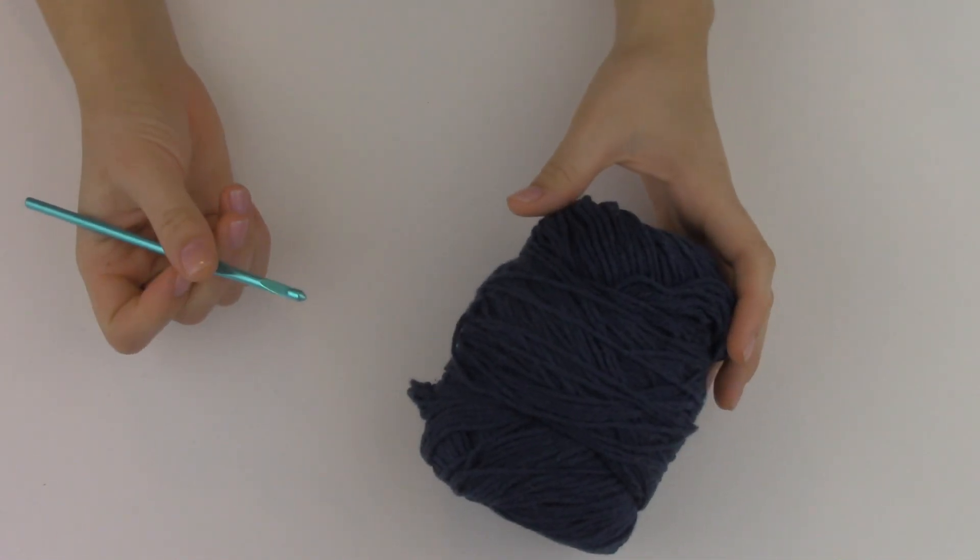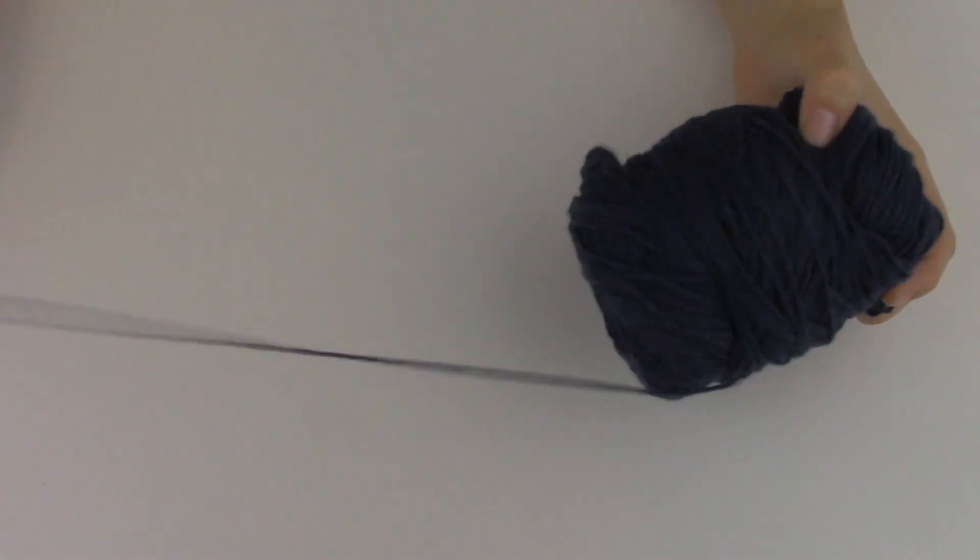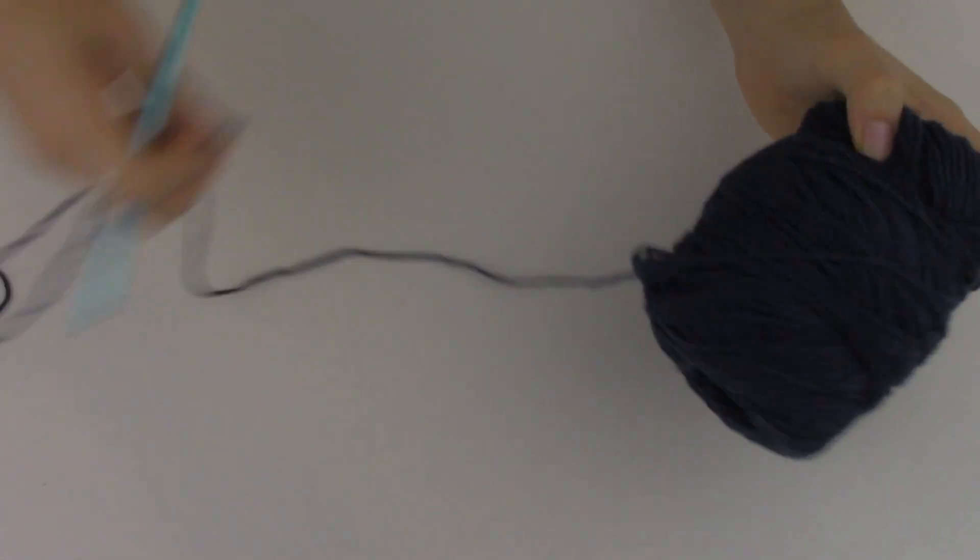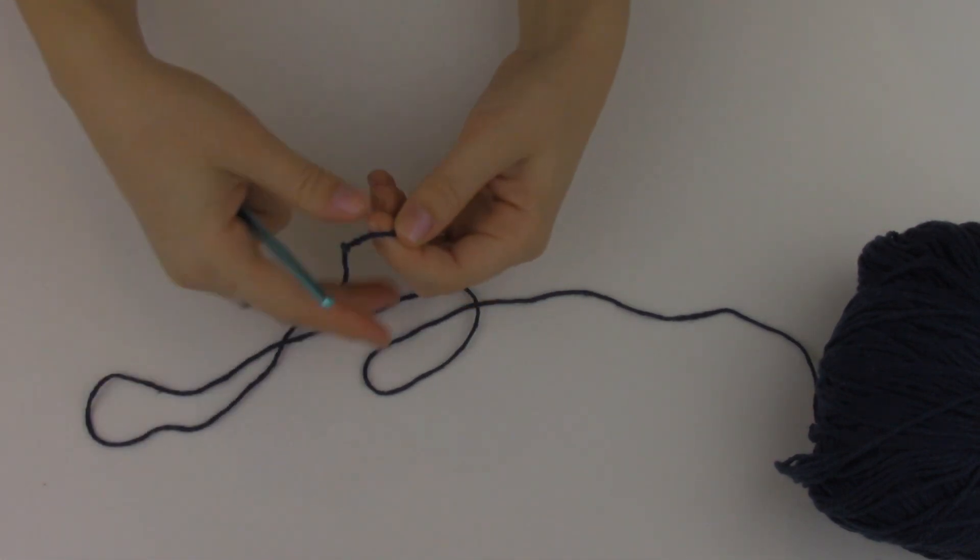I'm using 100% cotton yarn and a 5mm hook. If you're interested in making the same exact look as I am, this is a medium worsted weight yarn, 100% cotton. I'll leave a link down below for my favorite ones.